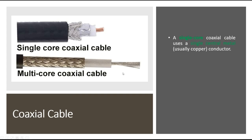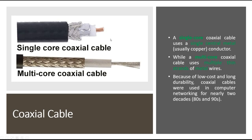Based on the conductor, a coaxial cable is categorized into two types: single core and multi-core coaxial cable. The single core coaxial cable uses a single central metal wire, usually copper, as the conductor. The multi-core coaxial cable uses multiple thin strands of metal wires. Due to low cost and long durability, coaxial cables were used in computer networking for nearly two decades.